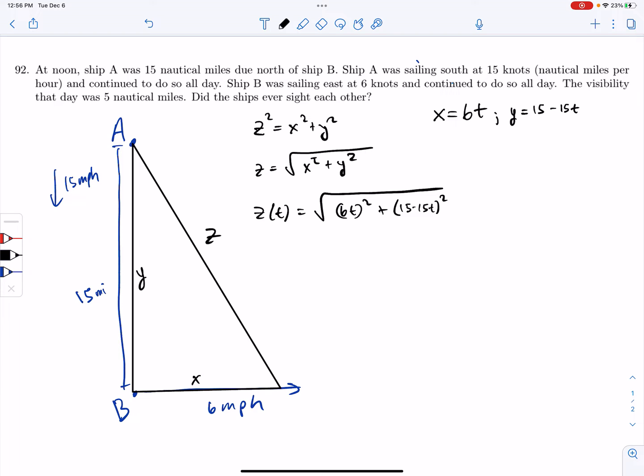Okay. So I have a function of time that relates to these quantities together. I want to minimize that distance. So I want to minimize Z of T. So what I'm going to do is I'm going to take the derivative. And before I do that though, I'm going to rewrite this function. So 6T squared, I could write as 36T squared plus 15 minus 15T quantity squared. If I expand that out, I'm going to have 225 minus 450T plus 225T squared.